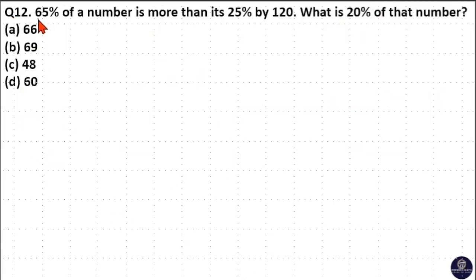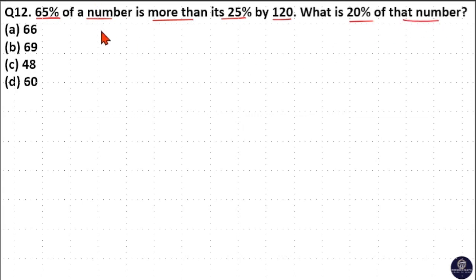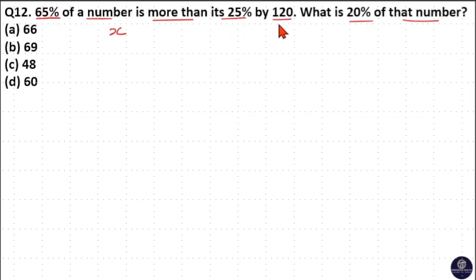Next question: 65% of a number is more than its 25% by 120. What is 20% of that number? Let us consider this number as x. The meaning of the first sentence is: the difference between 65% and 25% of a number is 120.